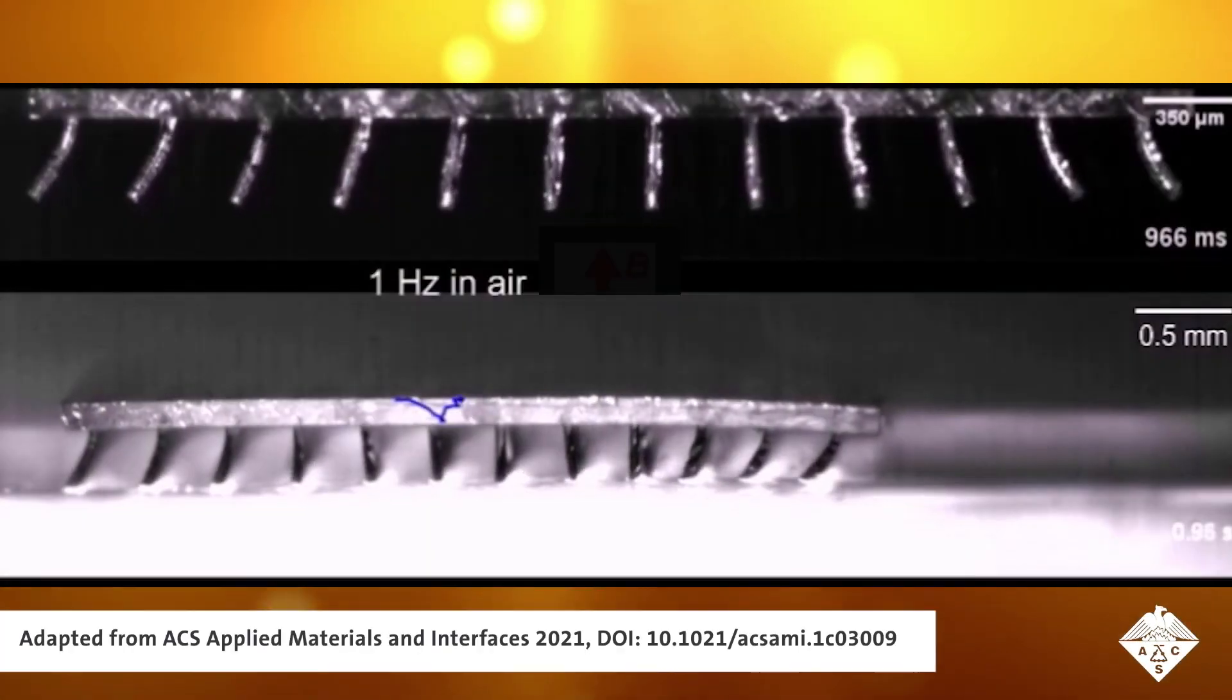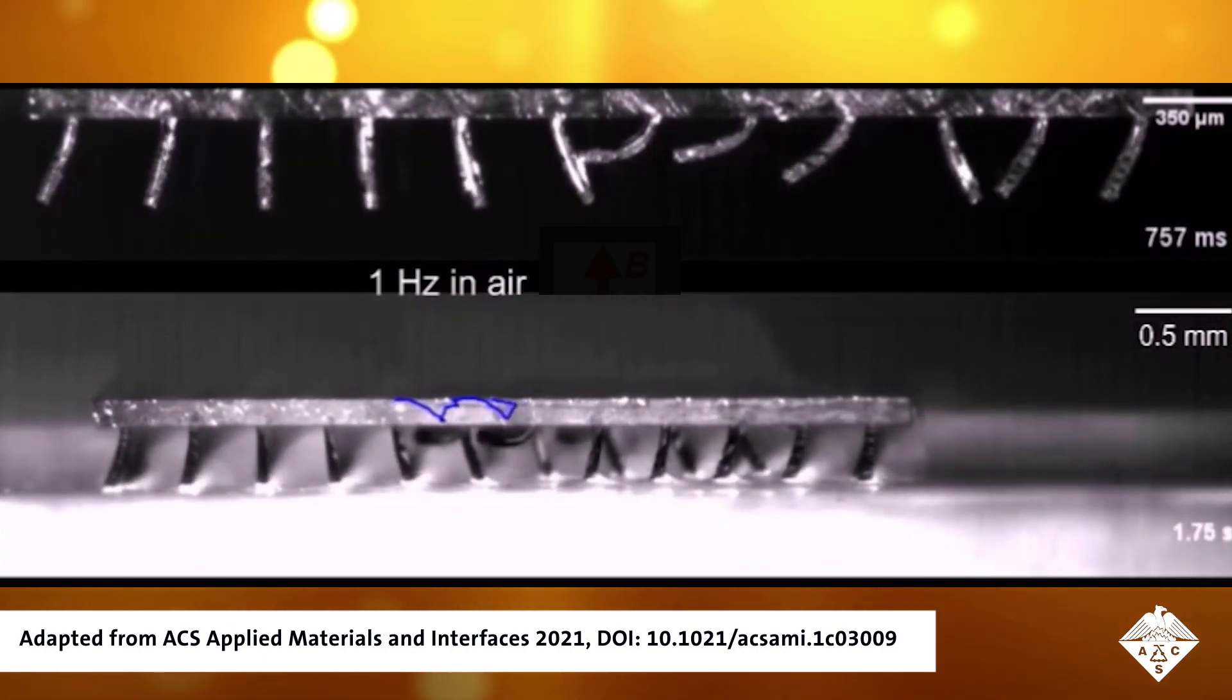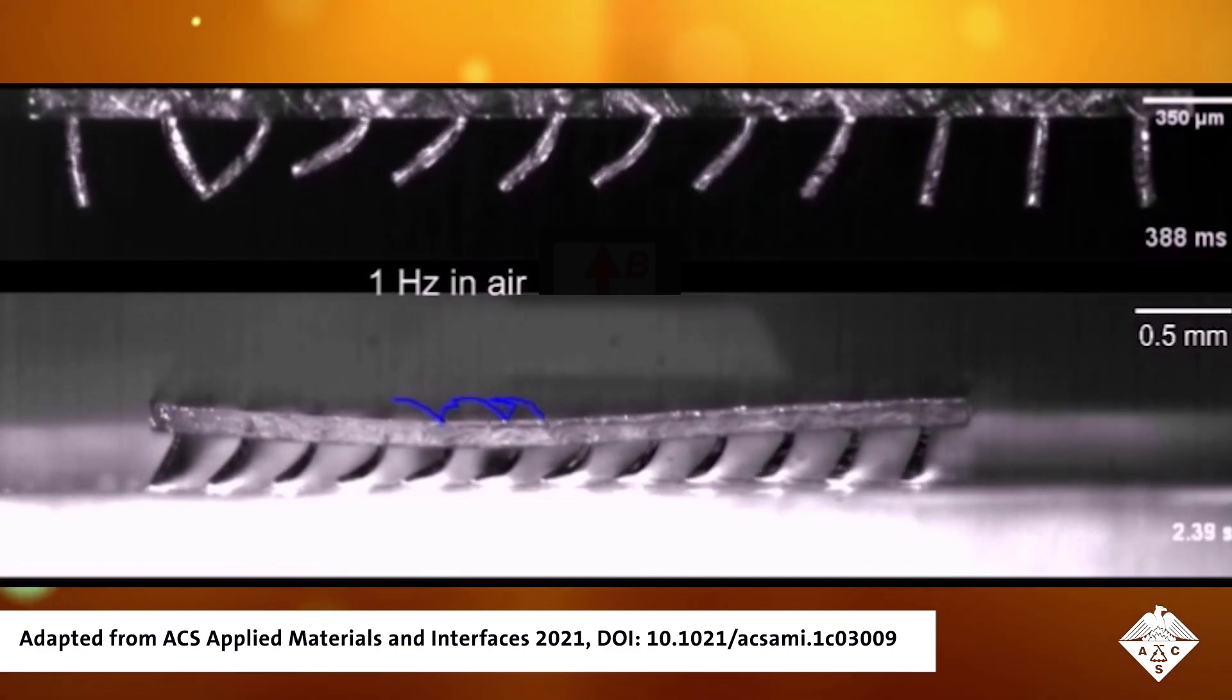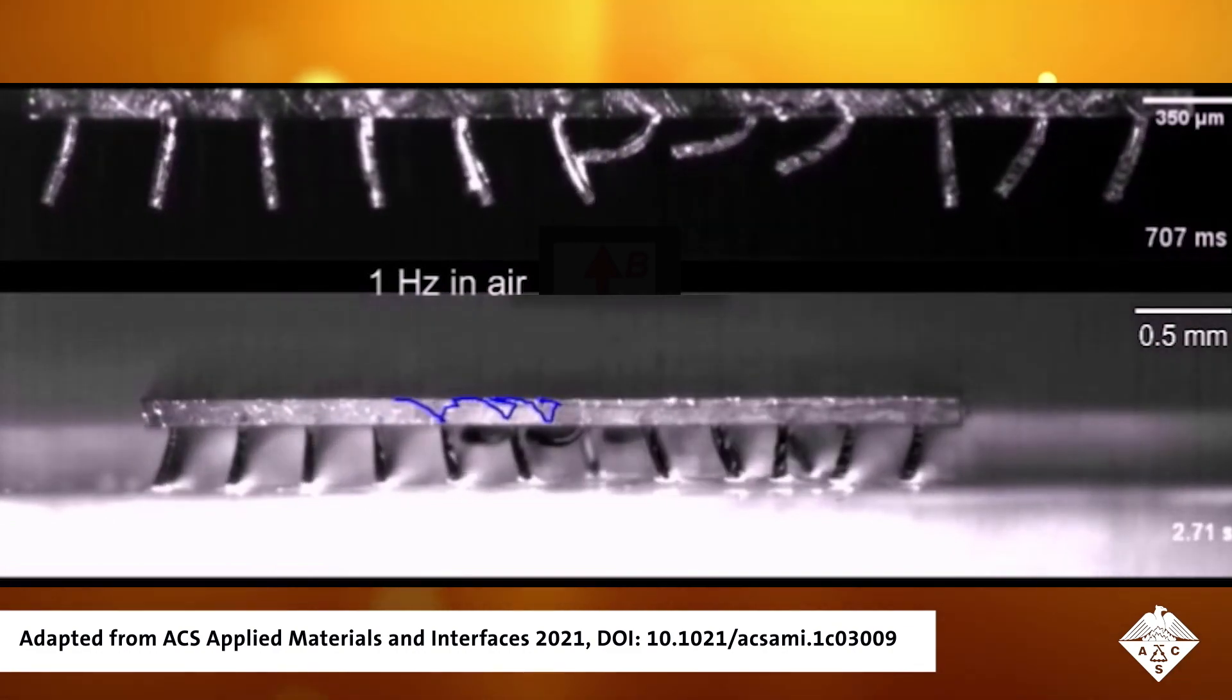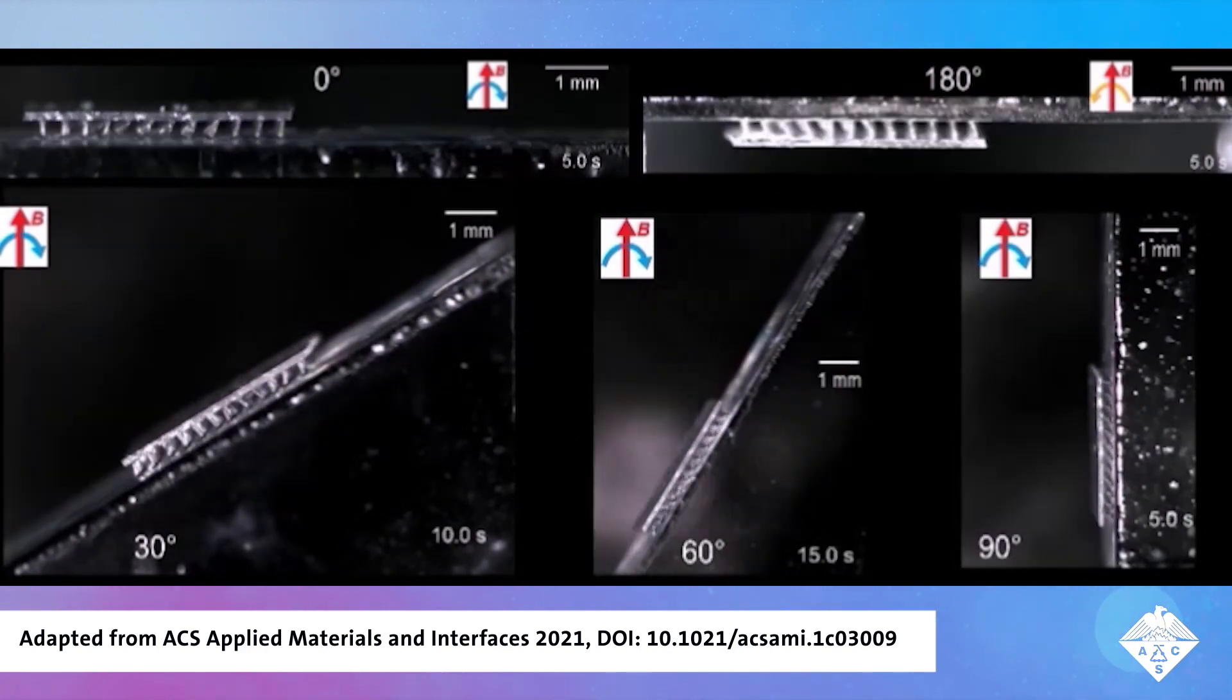Some soft millirobots are already being developed for medical applications, thanks to their small size and ability to be powered externally, often by a magnetic field. They can inch or roll themselves through uneven environments, like the bumpy tissues of our gastrointestinal tract.